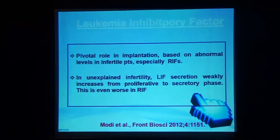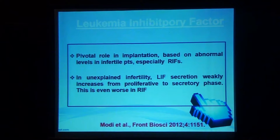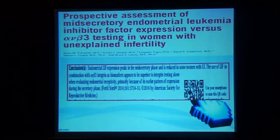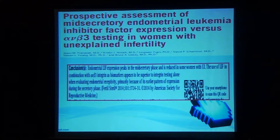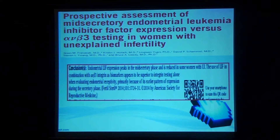What about leukemia inhibiting factor (LIF)? It has a vital role in implantation based on hormonal levels in infertile patients — with abnormal levels in infertile women, especially in repeated implantation failure. In unexplained infertility, LIF secretion weakly increased from proliferative to secretory phase, and this is even worse in repeated implantation failure. Based on a 2014 study, it is better to combine both LIF and alpha-V beta-3, because LIF shows earlier expression. When both are absent, it has the worst prognosis; if alpha-V beta-3 is absent but LIF is present, it's not as bad; if both are present, it is good prognosis.